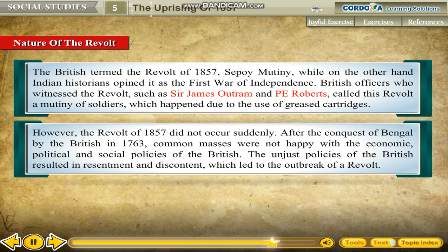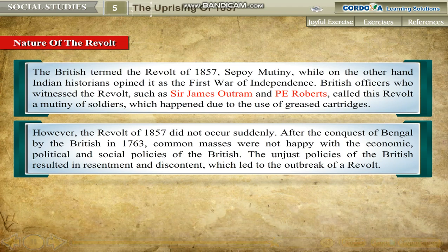However, the revolt of 1857 did not occur suddenly. After the conquest of Bengal by the British in 1763, common masses were not happy with the economic, political and social policies of the British. The unjust policies of the British resulted in resentment and discontent, which led to the outbreak of a revolt.